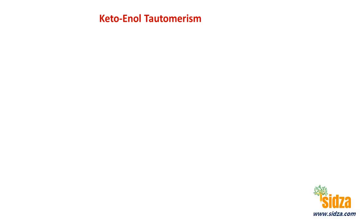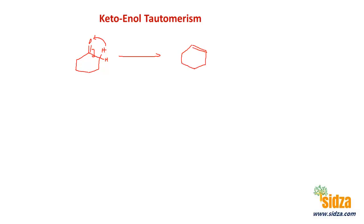Let's take more examples of keto-enol tautomerism. We have a cyclic molecule with a C=O group — this is cyclohexanone. The alpha carbon has two hydrogen atoms and is sp2 hybridized. A hydrogen can shift from this carbon to the oxygen, and the double bond shifts inside the ring. You then get a cyclic ring with a double bond and an OH group — this is called cyclohexenol. Then this molecule can go back, and the double bond shifts back to give the original keto form.